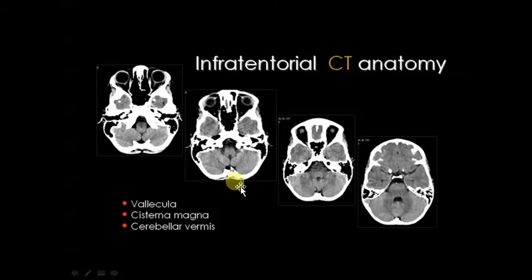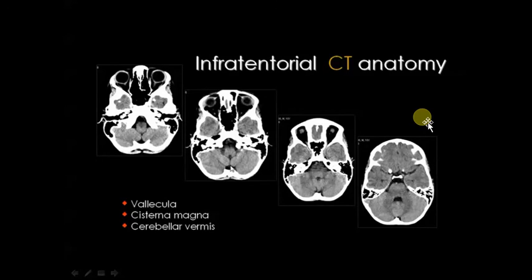Just behind that area you can see another cistern — we call it the cisterna magna. So in infratentorial CT anatomy: above the fourth ventricle you find the midbrain; directly through the level of the fourth ventricle you find the cerebellum behind and the pons in front; going down, the fourth ventricle narrows, the pons disappears, and the medulla oblongata appears in front of the narrow part of the fourth ventricle. This is how we distinguish the different parts of infratentorial anatomy.